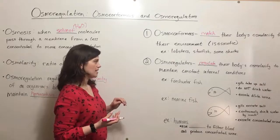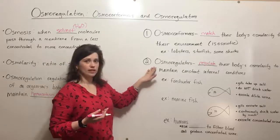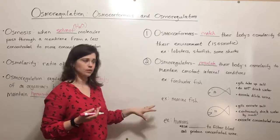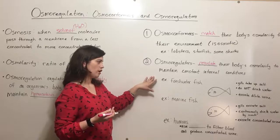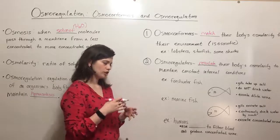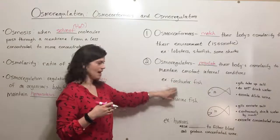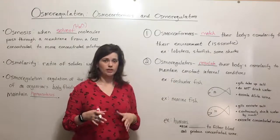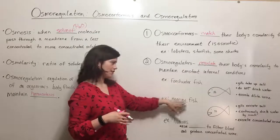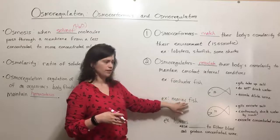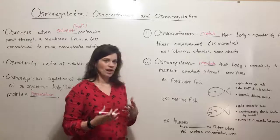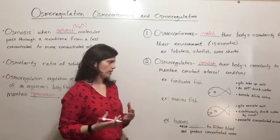Since osmoregulation is much more common among animals, let's look at some examples, starting with the difference between freshwater fish and marine fish. Certain fish can live in both freshwater and saltwater, but that's fairly rare. For the most part, freshwater fish cannot survive in saltwater and saltwater fish cannot survive in freshwater, because of the different ways in which they've adapted to osmoregulate.